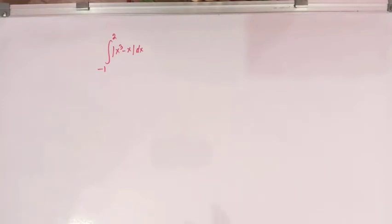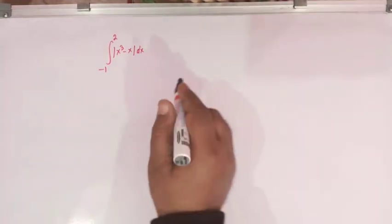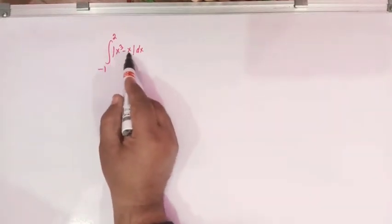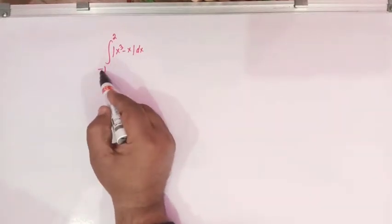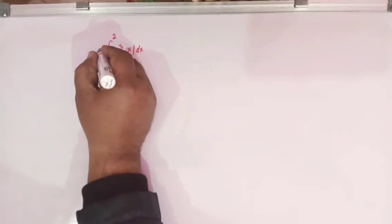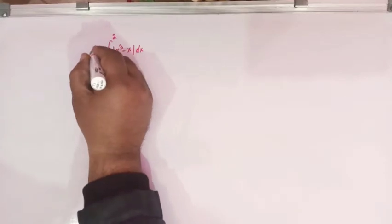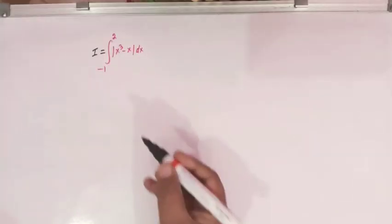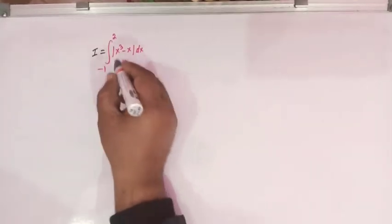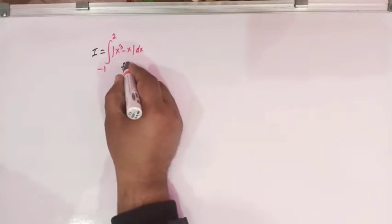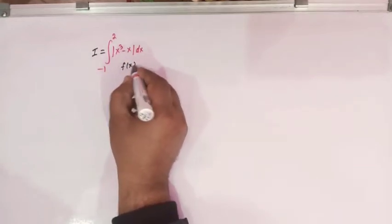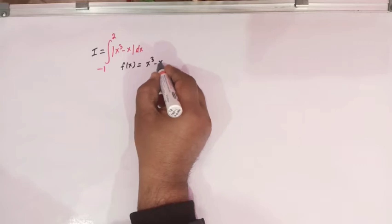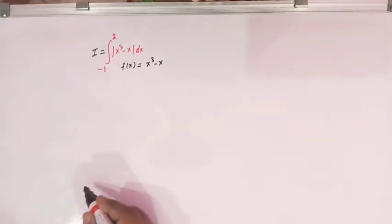So here we have to integrate mod of x cubed minus x from minus 1 to 2. So let us call this integral as I. Now let us take f of x is equal to x cubed minus x.